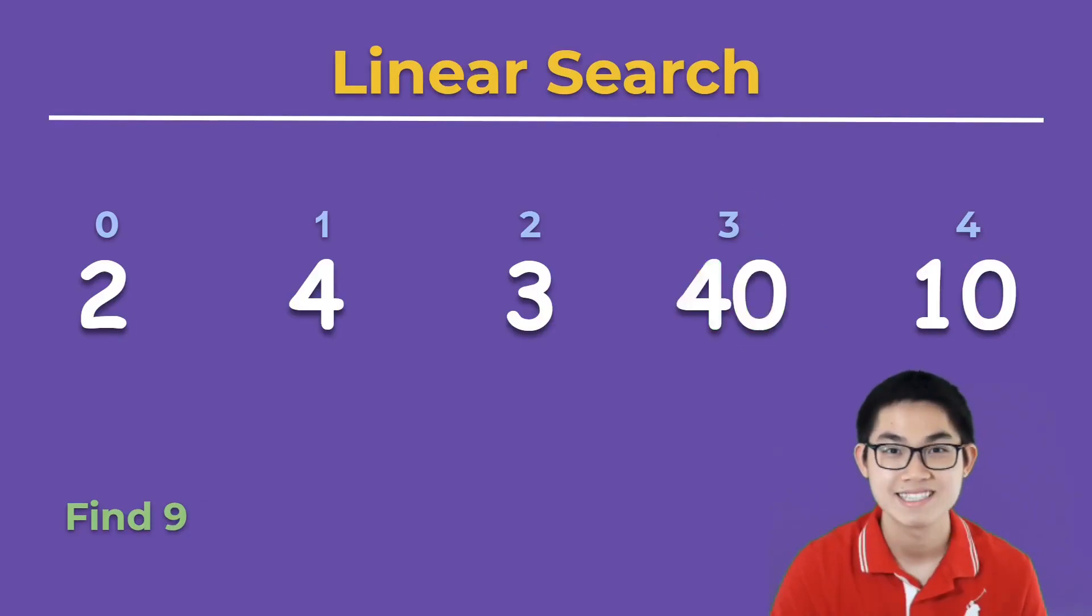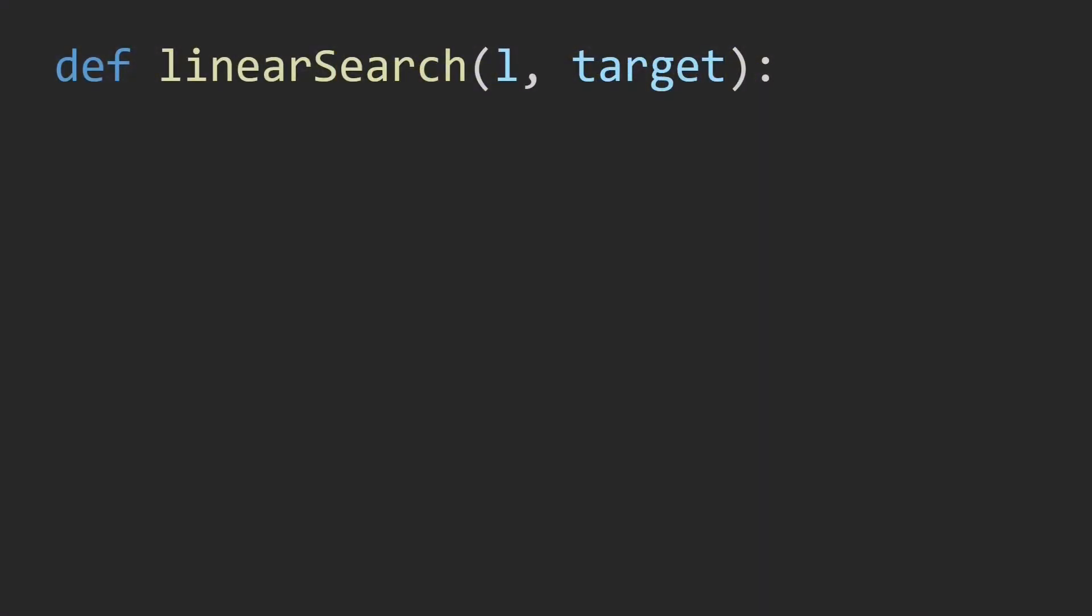Let's try to find number 9 in the array. We start here, that's not 9, no, no, no, and no. So we didn't find 9 in the array. In this case you can either return false or return minus 1, indicating that we did not find number 9 in this array.